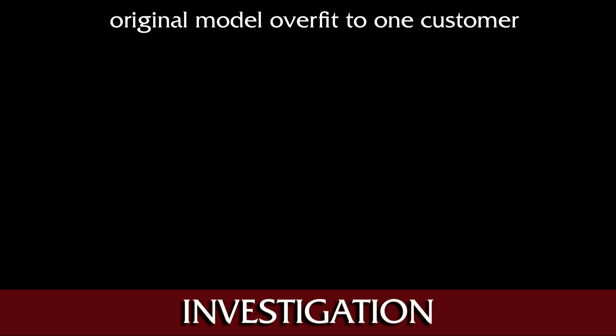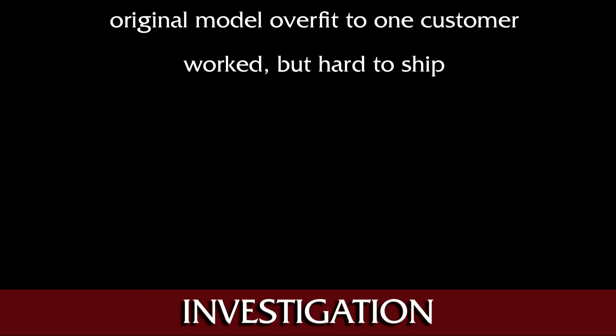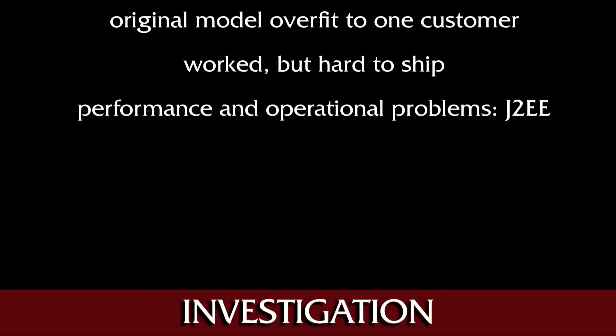So what was wrong with version one that got us in this mess in the first place? Basically, the team started with one of the seven customers and based all of the abstractions on that one customer, without bothering to validate whether those assumptions would be true for the other six. The system mostly worked but was very hard to ship, with many performance and operational problems primarily due to the team's lack of understanding of the operational characteristics of J2EE.